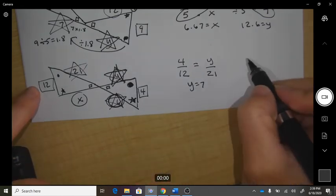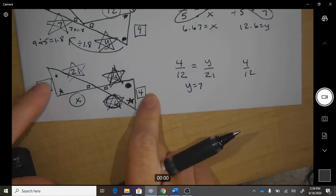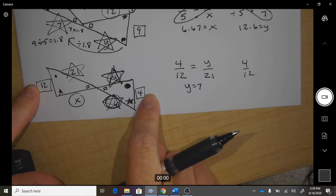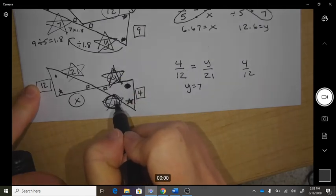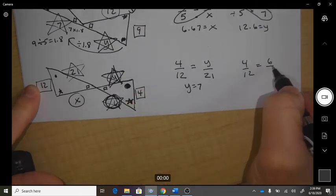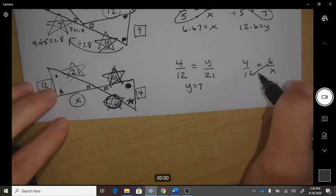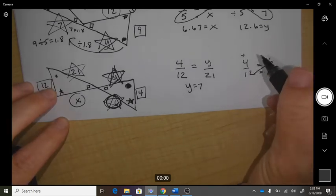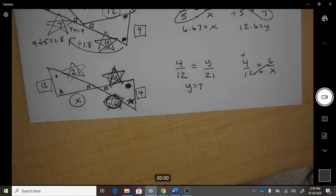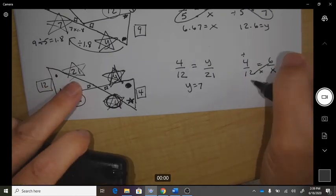And then 4 to 12 would be the same ratio as 6 would be to x. So here, 6 times 12 and divided by 4, and I would get 18.